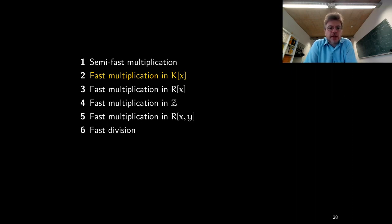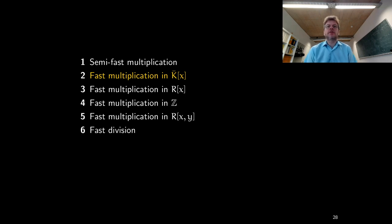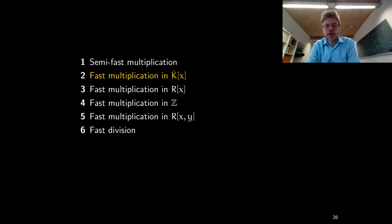Last time we discussed polynomial multiplication for the case when the ground field is algebraically closed. We have seen that in this case we can solve the multiplication problem extremely quickly, very efficiently, using the idea of the fast Fourier transform. The fast Fourier transform is an operation that is not only used for polynomial multiplication, but has many other applications, and it's very efficient, so that's why it's so attractive for many other applications as well.